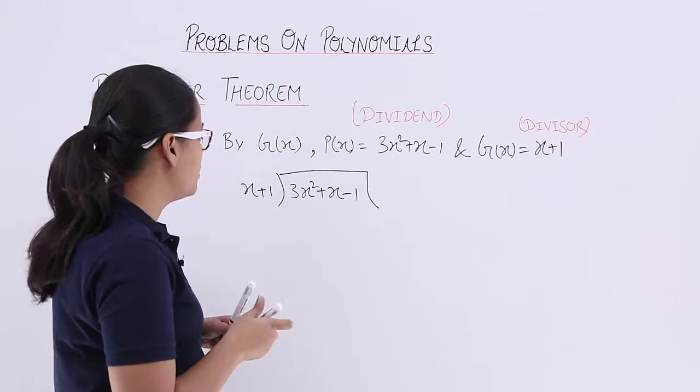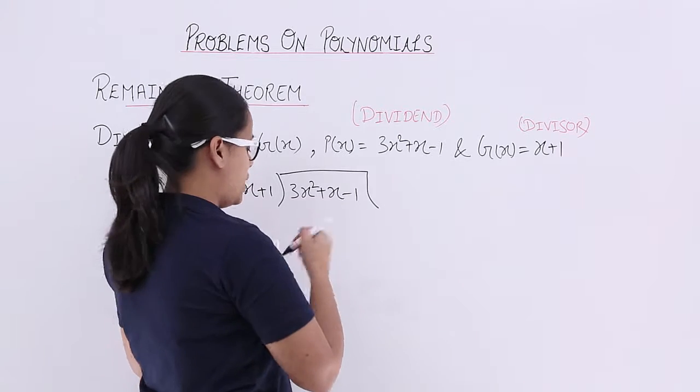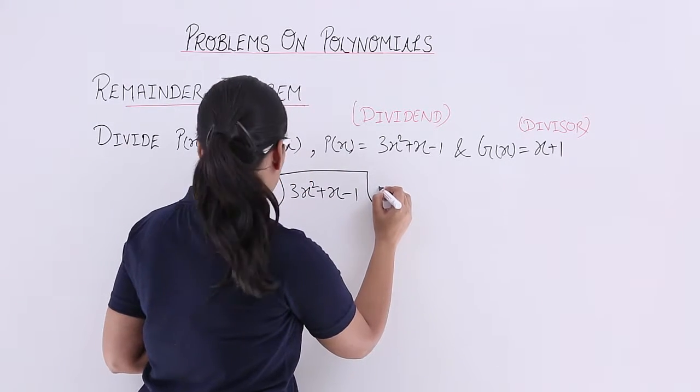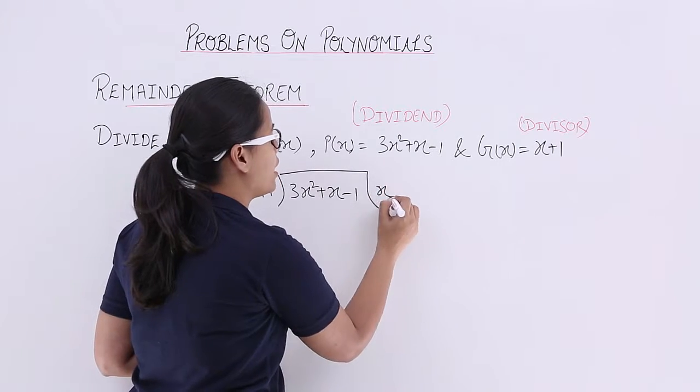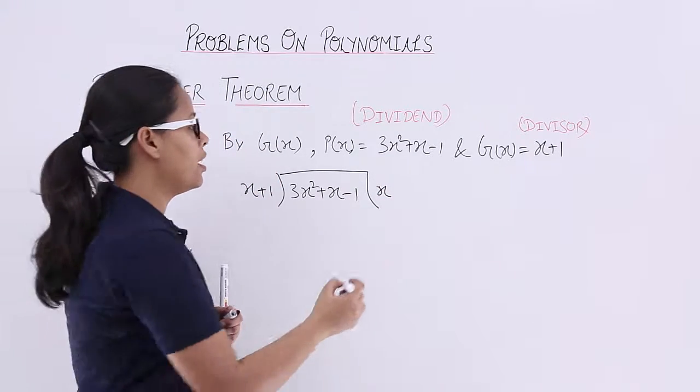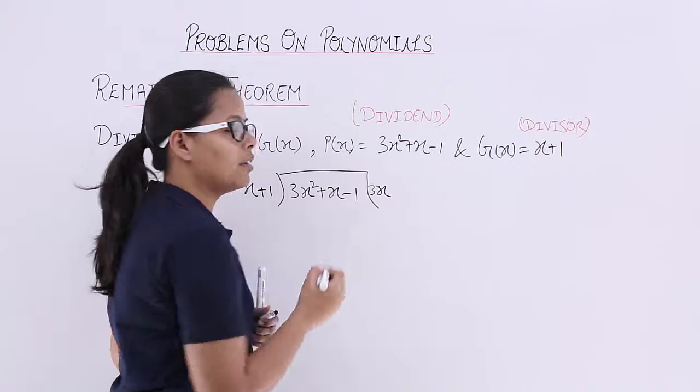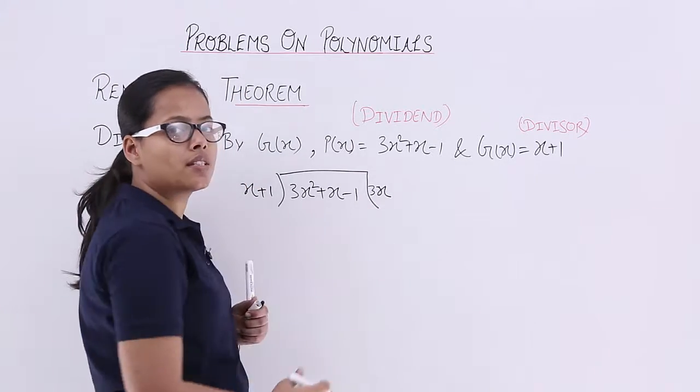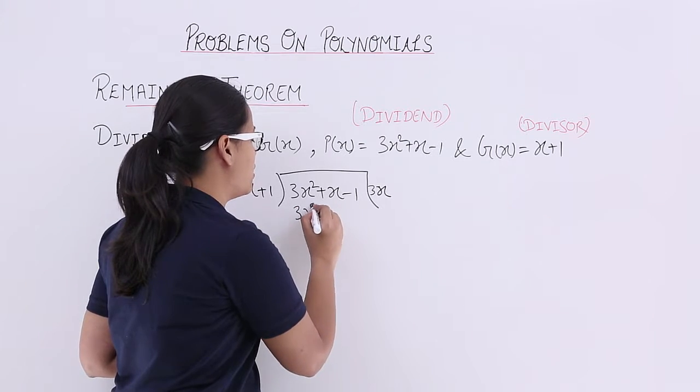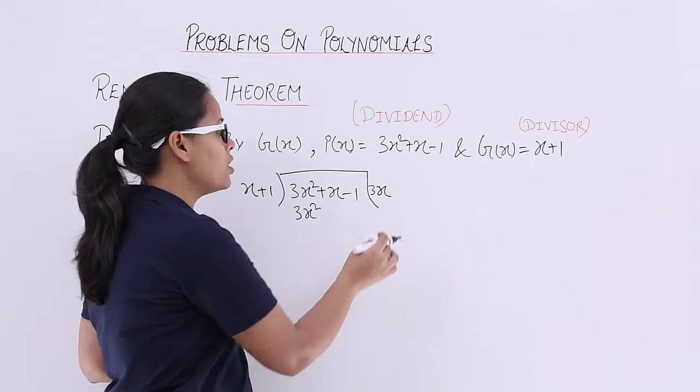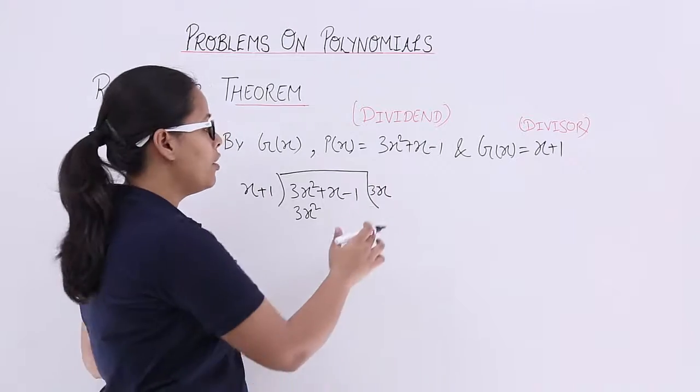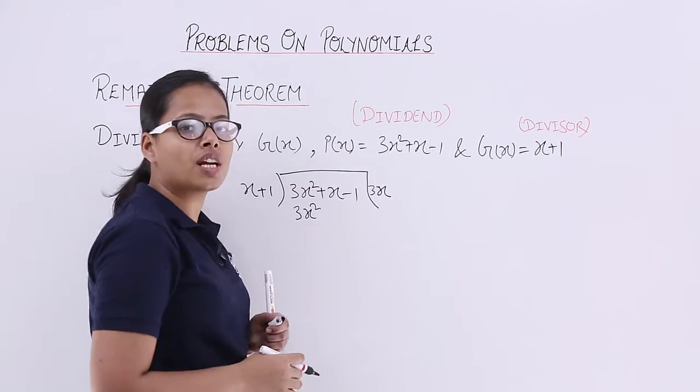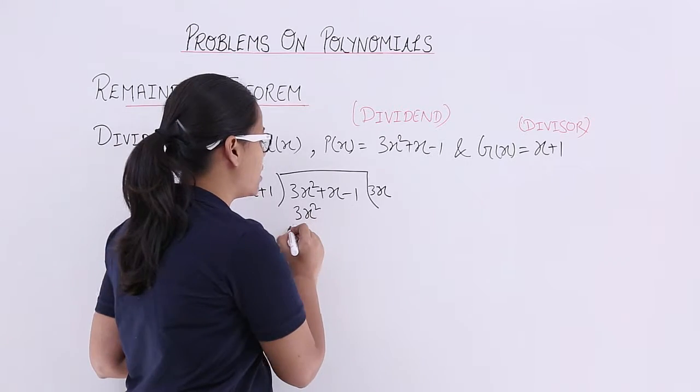Now let's start dividing it. What will be the quotient here? Quotient here will be x into 3. When you multiply this x with 3x², what you will get? 3x². So our first quotient should be, when you divide this with x, it should be similar to 3x².